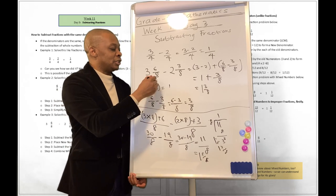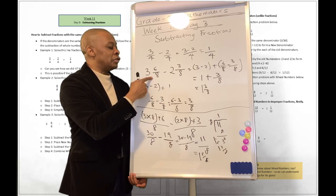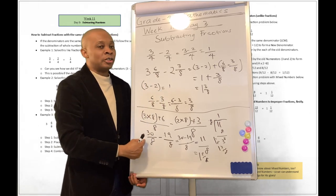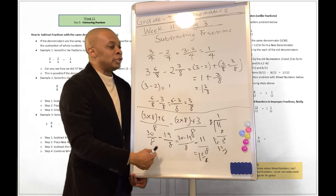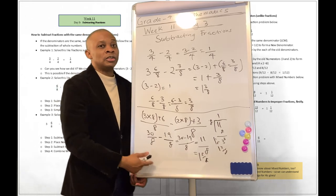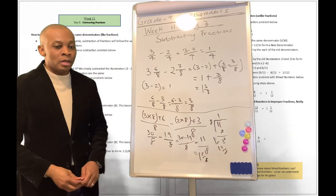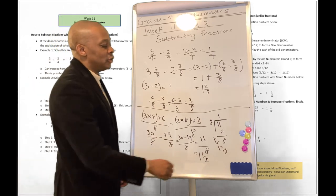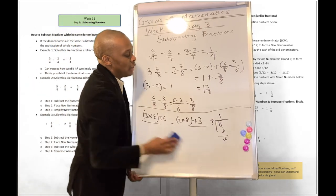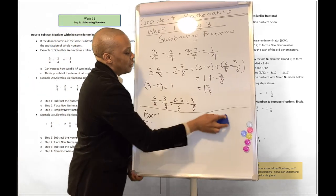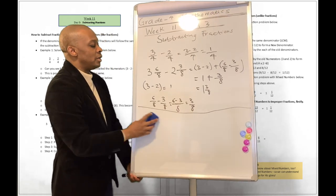So there are different ways you can use to subtract fractions from each other when the fractions are mixed fractions. The preferred method is to convert the mixed fraction to an improper fraction first, and then follow the same logic to subtract one fraction from another.